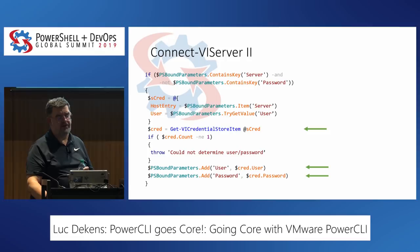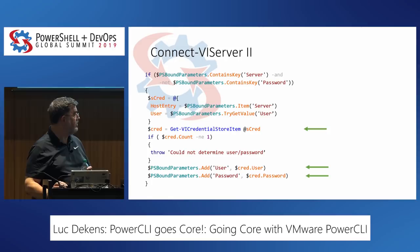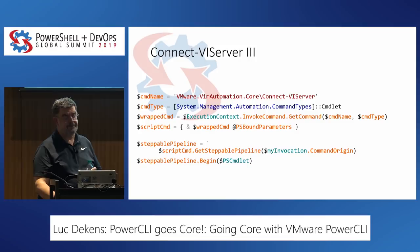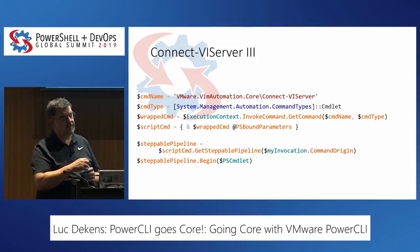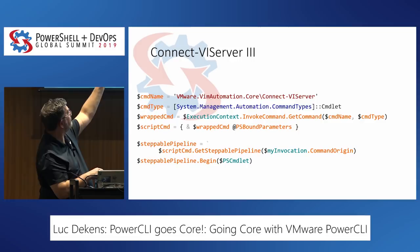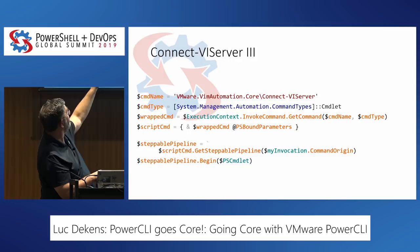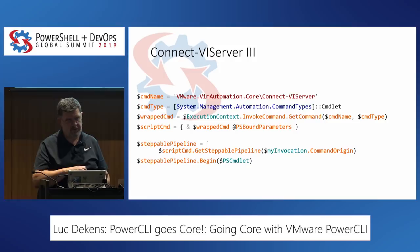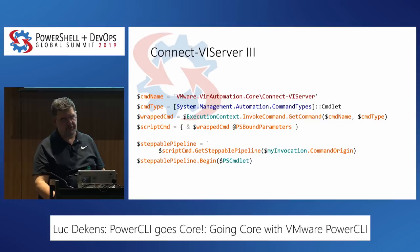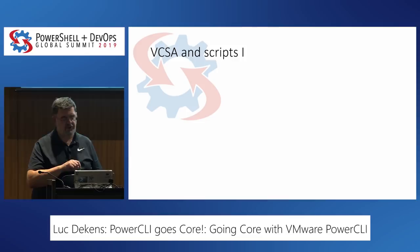In summary for the Connect-VIServer proxy: all the magic happens in the begin block. We test if a user parameter was passed. If not, we get it from the credential store. If only one entry is returned, we add or replace the user and password parameters in PSBoundParameters. Then the proxy calls the original Connect-VIServer cmdlet with those adapted parameters, starting the pipeline as needed. This lets us solve the issue without touching any of our original legacy scripts.